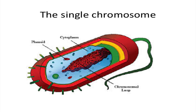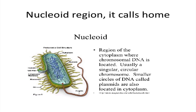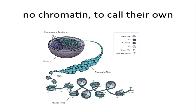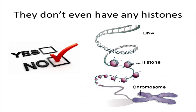The single chromosome calls the nucleoid region home. No chromatin to call their own — they don't even have any histones.